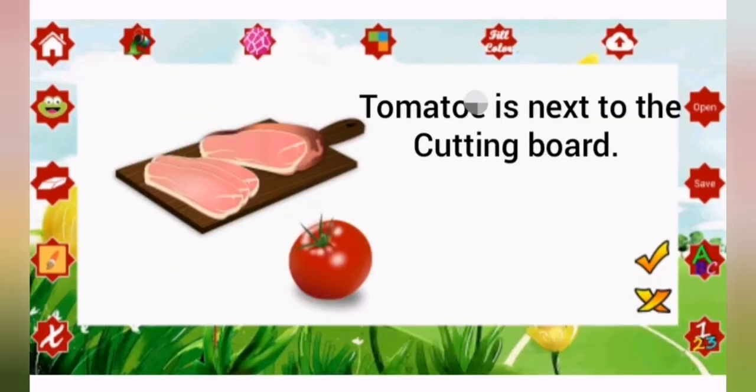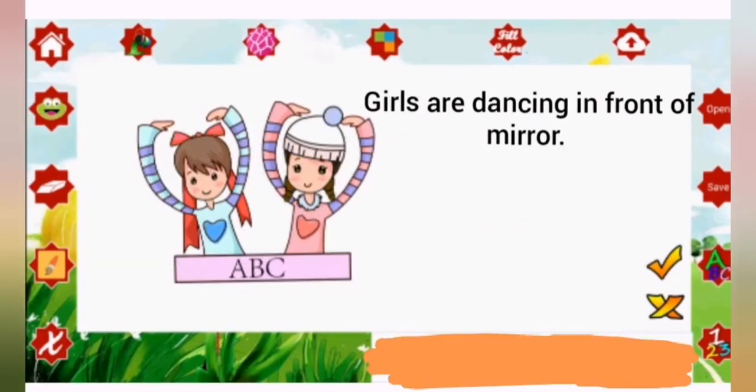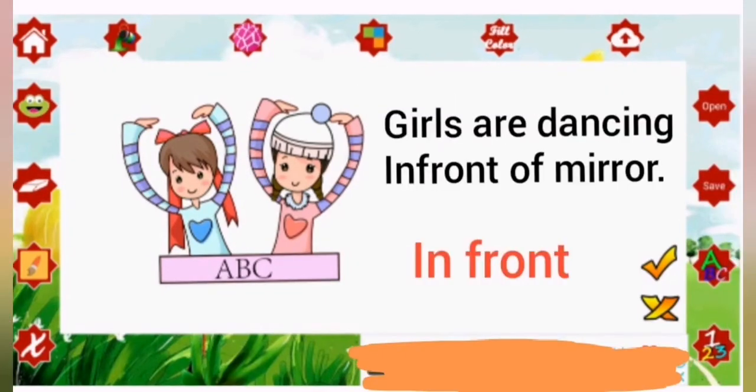Tomato is next to the cutting board. Here, next to is the example of preposition. Girls are dancing in front of mirror. Here, in front is preposition.